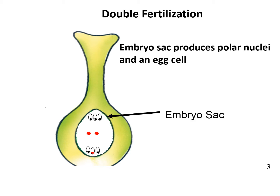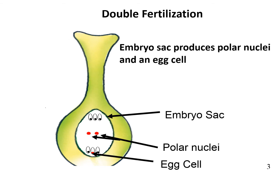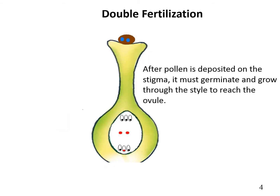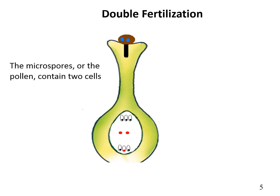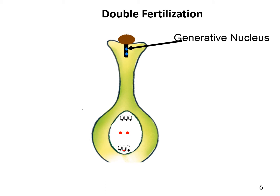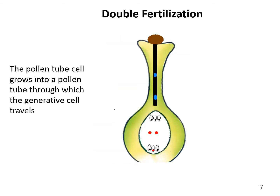The embryo sac actually produces polar nuclei and an egg. After pollen is deposited on the stigma, it must germinate and grow through the style to reach the ovule. The microspoore, or pollen, contains two cells: the generative cell and the tube nucleus. The pollen tube cell grows into a pollen tube, through which the generative cell travels. As it travels through the style to reach the embryo sac, the pollen tube growth is supported by the tissue of the style. The germination of the pollen tube requires water, oxygen, and certain chemical signals.